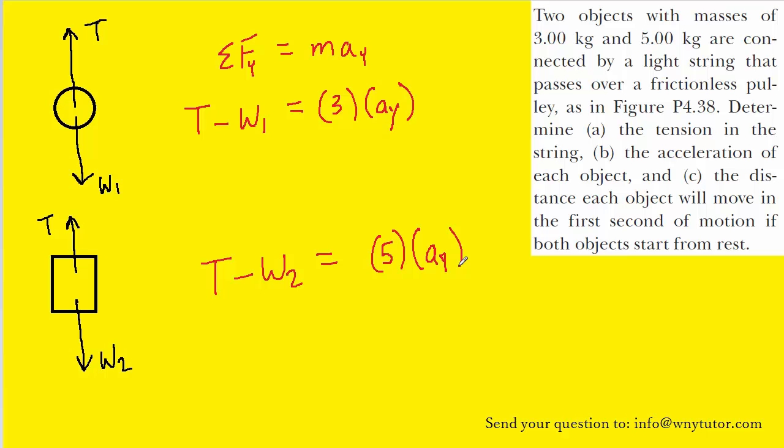So instead of just putting aY here, as we did before, we're going to actually stick a negative sign in the front. The acceleration of the circular object was in fact positive because the circular object will be accelerated upward. We just have to make sure to include that negative sign for the downward accelerating square object.